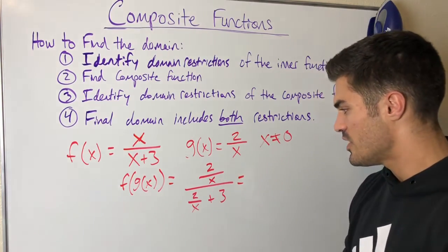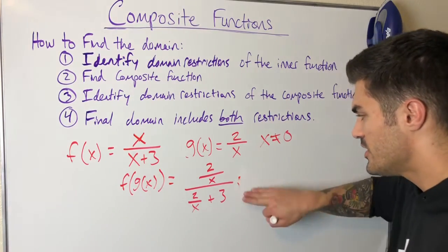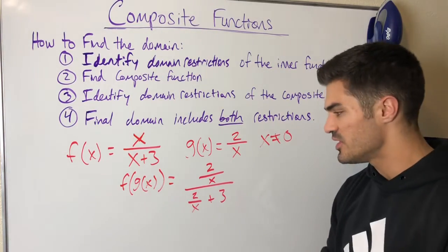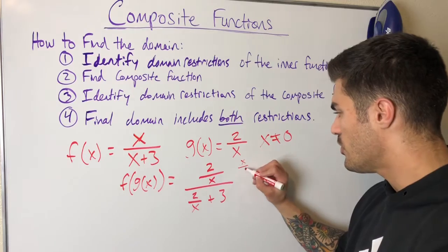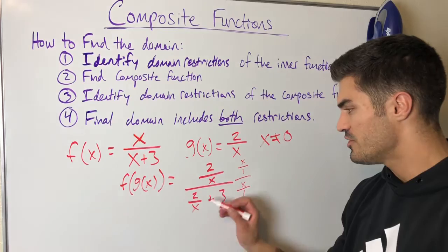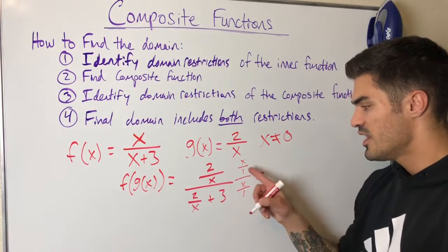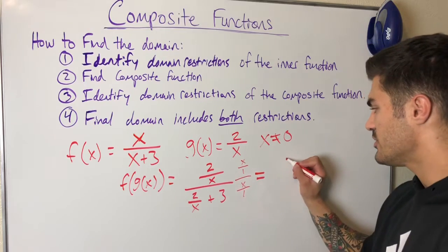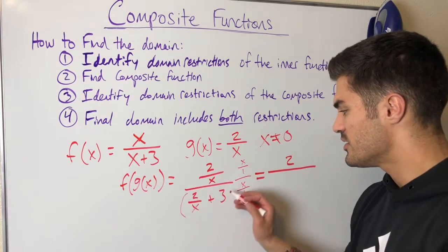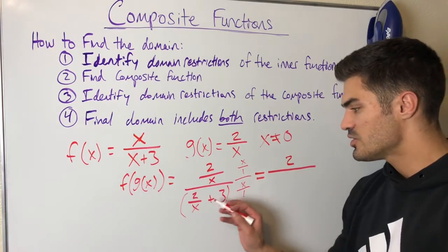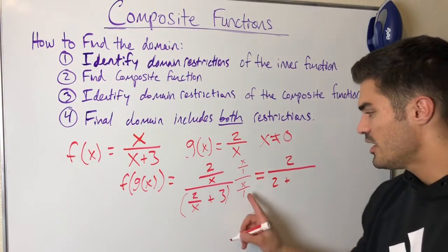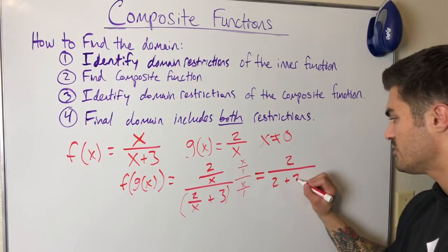Now I need to simplify this complex fraction. I'll multiply top and bottom by x over 1, which will eliminate all the fractions. x over 1 times 1 over x cancels, leaving 2 on top. For the denominator: x times 2/x gives 2, and x times 3 gives 3x.